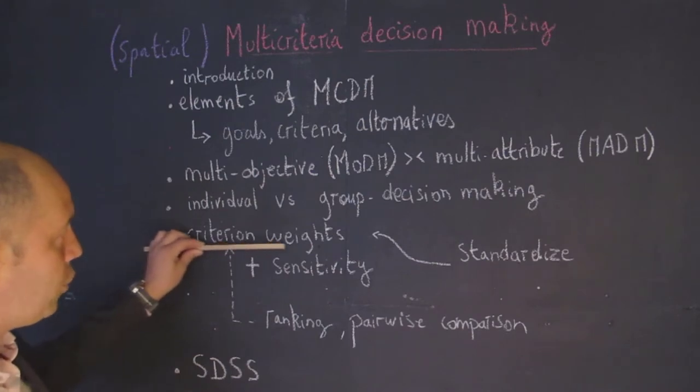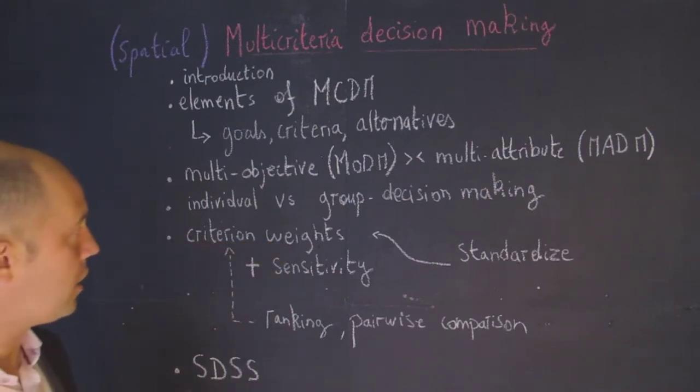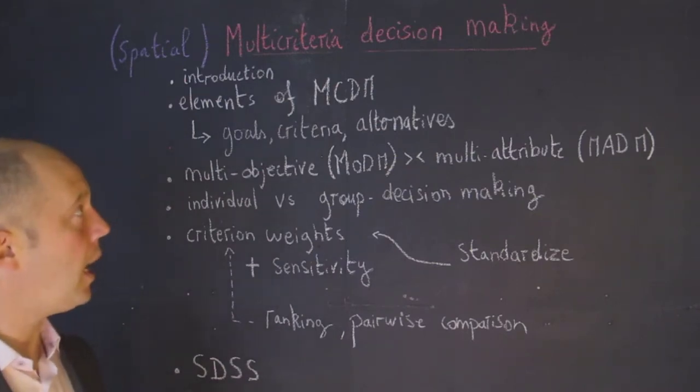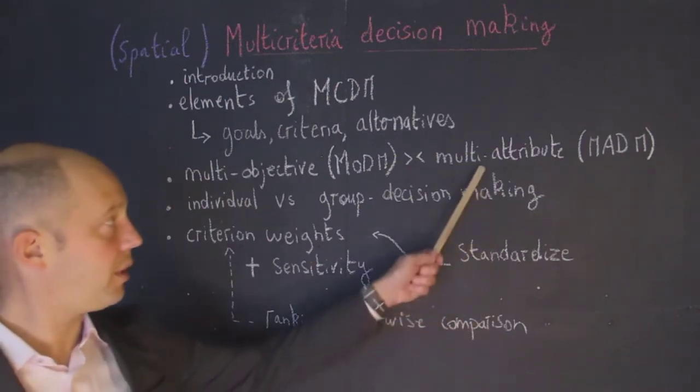Next we'll talk about criterion weights, which is quite an important subtopic. What type of weights to give to all those different attributes that we were talking about earlier?